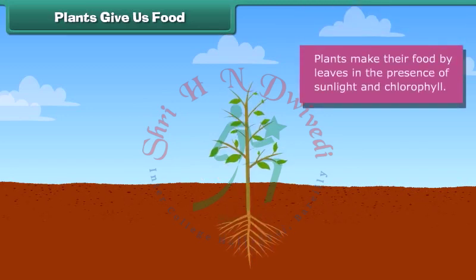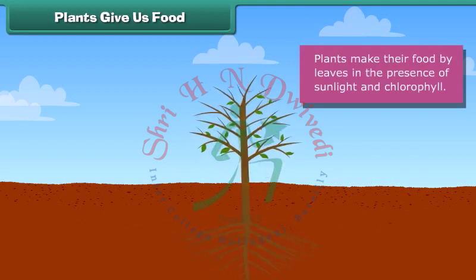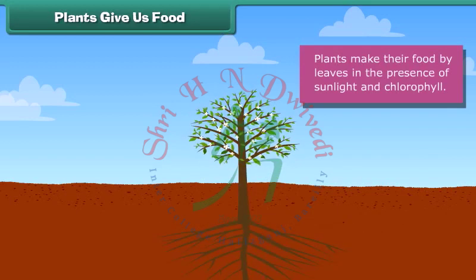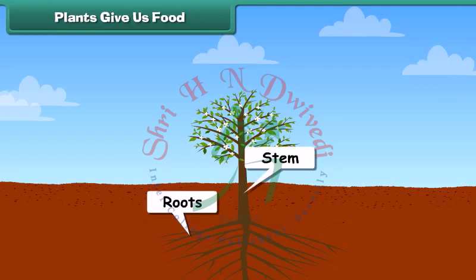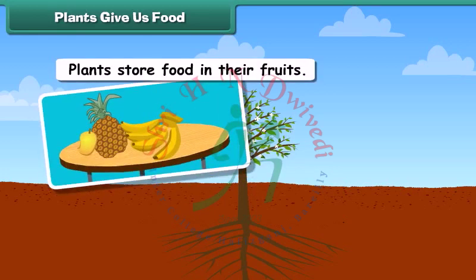Some food is used by plants and the remaining is stored in different parts of plants like roots and stems. We eat the stored food of plants in these plant parts — it is good for our health. Many plants store food in their fruits.